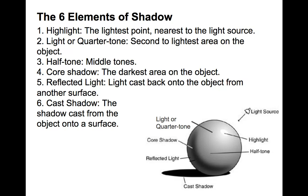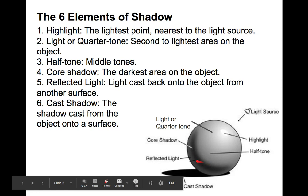The six elements of shadow: highlight, which is the lightest point nearest to the light source; light or quarter tone, the second to lightest area; half tone, the middle tones; quarter shadow, the darkest area on the object; reflected light, which is light cast back onto the object from another surface; and cast shadow, the shadow cast from the object onto a surface. The highlight is not at the edge of the sphere because the sphere is spherical and that side falls away from the light.